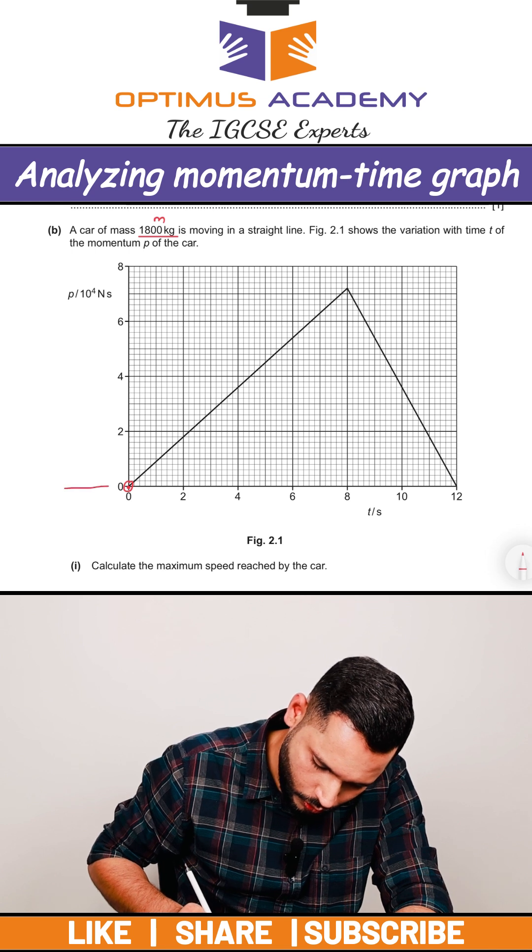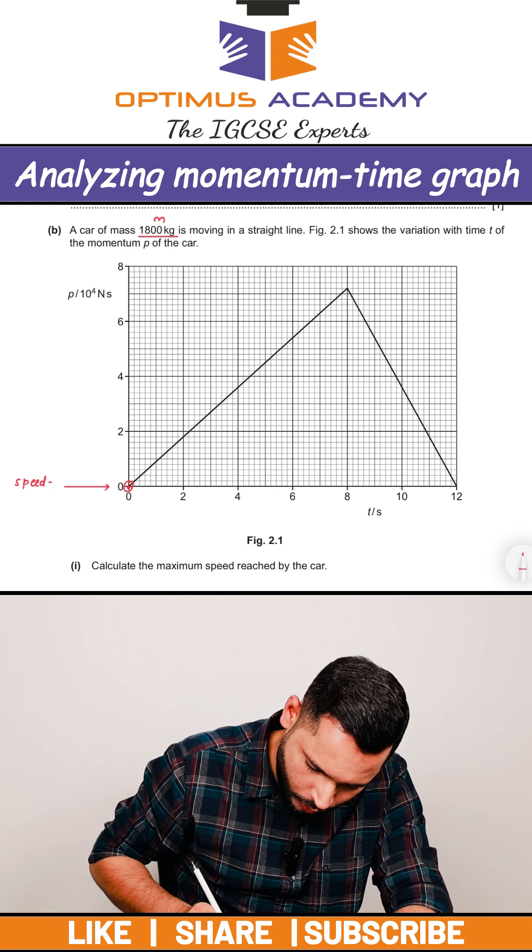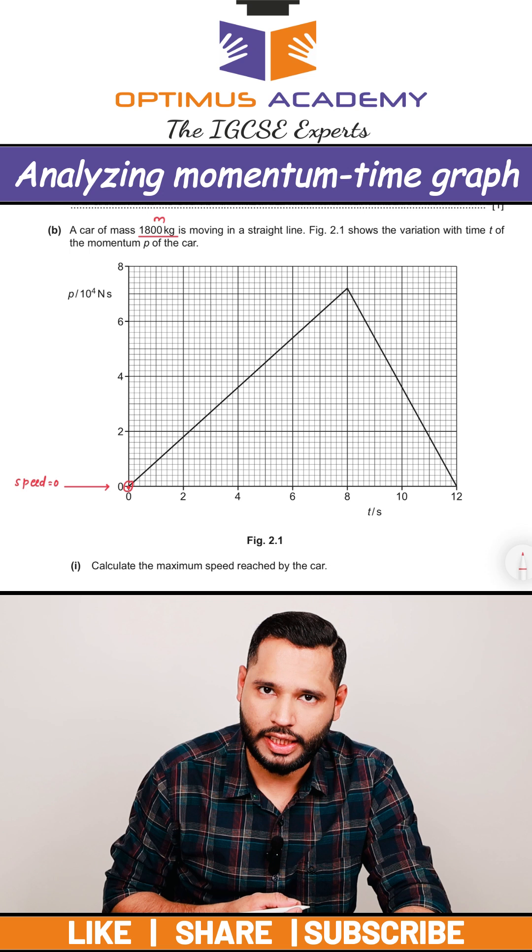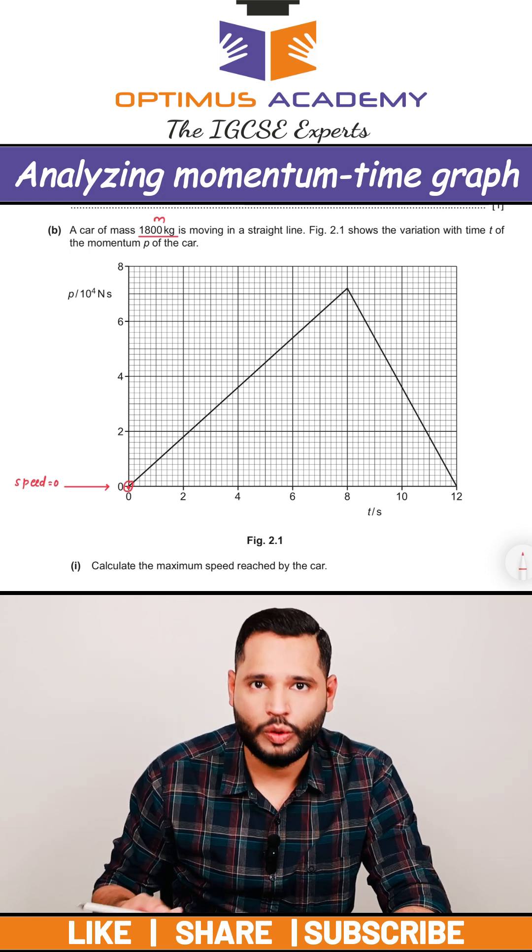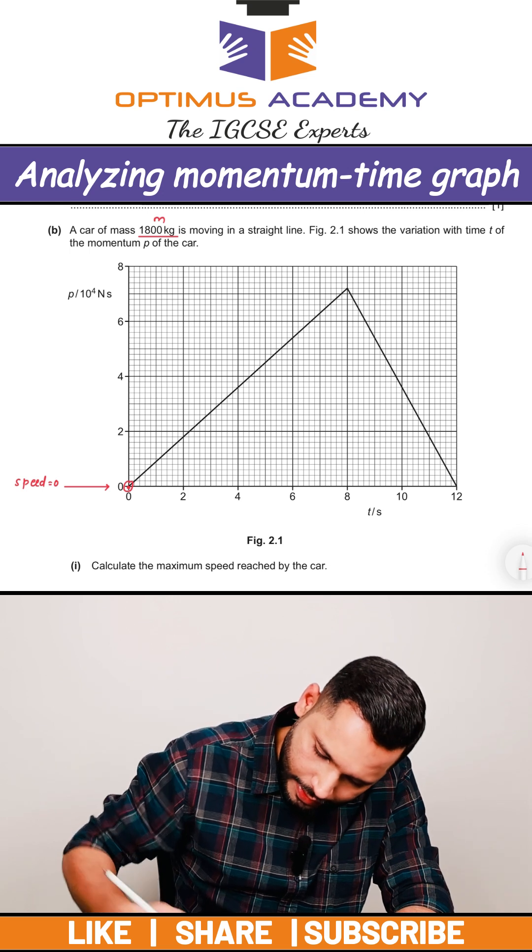So you can say here the speed of the object is going to be zero. Why? Because momentum is mass into velocity. Mass is 1800. If momentum is zero, it means the velocity of the object is also zero.